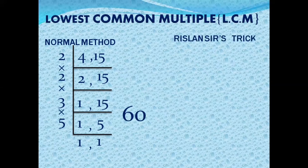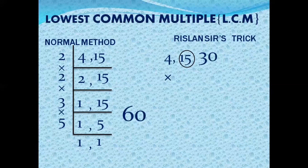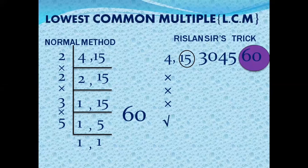According to my trick for 4 and 15: take the largest number, 15. Can 15 be divided by 4? No. Multiples: 15×2=30 — can't divide by 4. 15×3=45 — can't divide by 4. 15×4=60 — can 60 be divided by 4? Yes. So the LCM is 60.